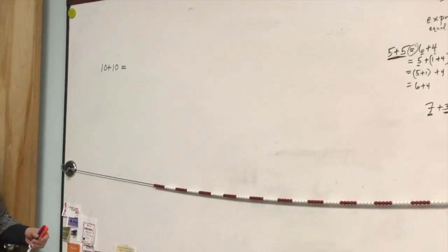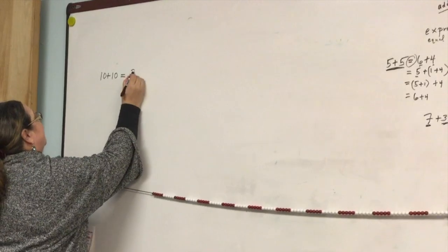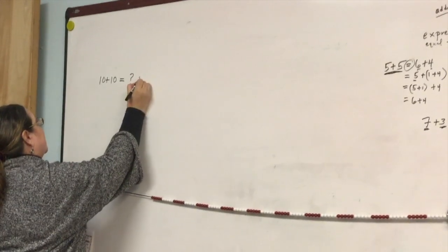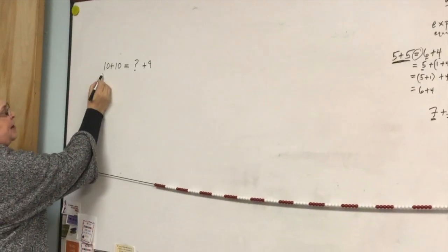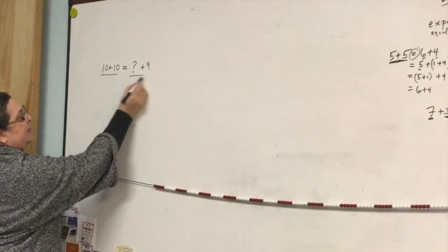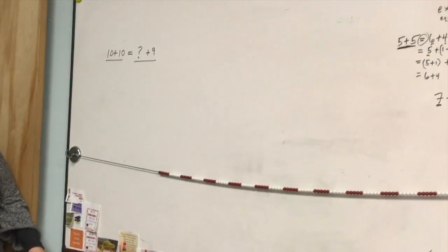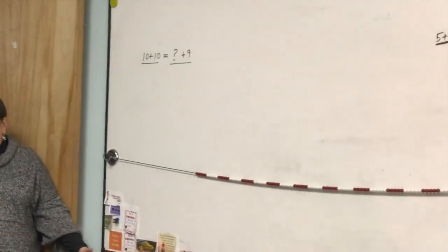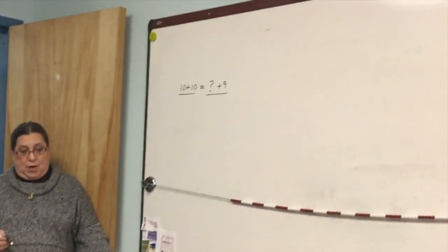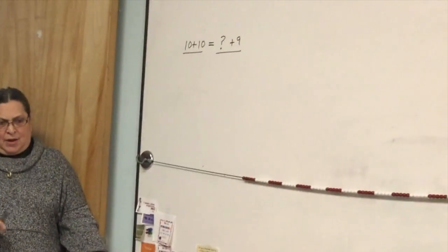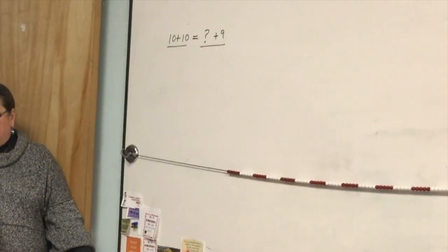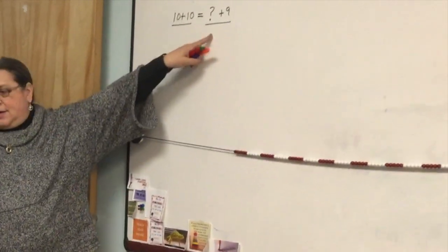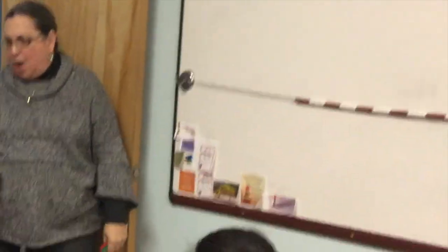Ten plus ten is equivalent to some unknown plus nine. So, here's our expression. Ten plus ten is going to be equivalent to another expression, and that is some unknown number plus nine. We want it to be equivalent. Four people are ready. Are you guys ready? Turn and talk to the person next to you about what number you think goes in there and why. Be sure to say why.